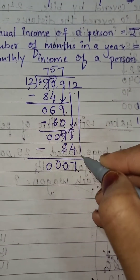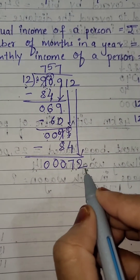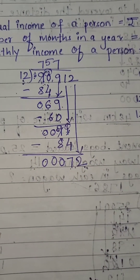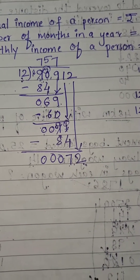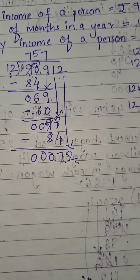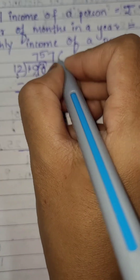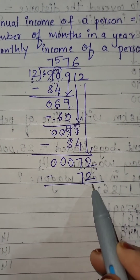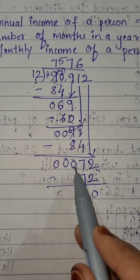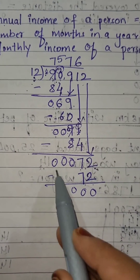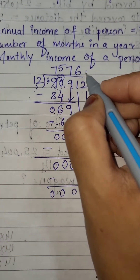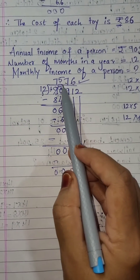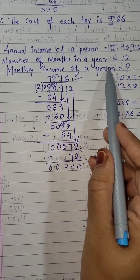Bring down the next number 2 — it becomes 72. Read the 12 table till you get 72: 12×6=72. Subtract: 2 minus 2 is 0, 7 minus 7 is 0. So the answer is 7,576. The monthly income of a person is rupees 7,576.